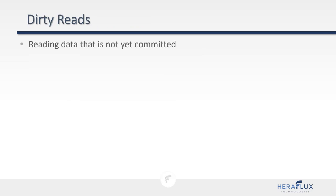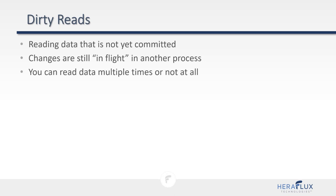Dirty reads mean reading data that has not yet been committed — changes still in-flight in another process are being read as if they are true. You can end up reading data multiple times or not at all. The common argument for allowing dirty reads is that it's faster, but if you want an incorrect answer quickly, that might be what you want. If you're looking for accuracy, it's not recommended.